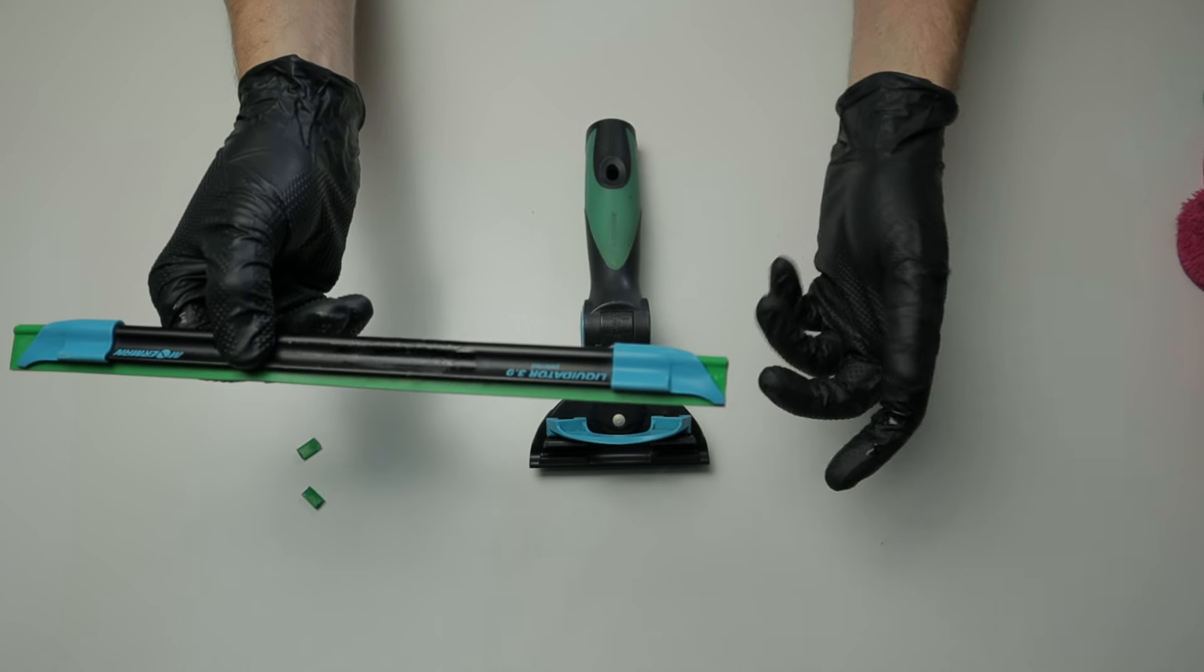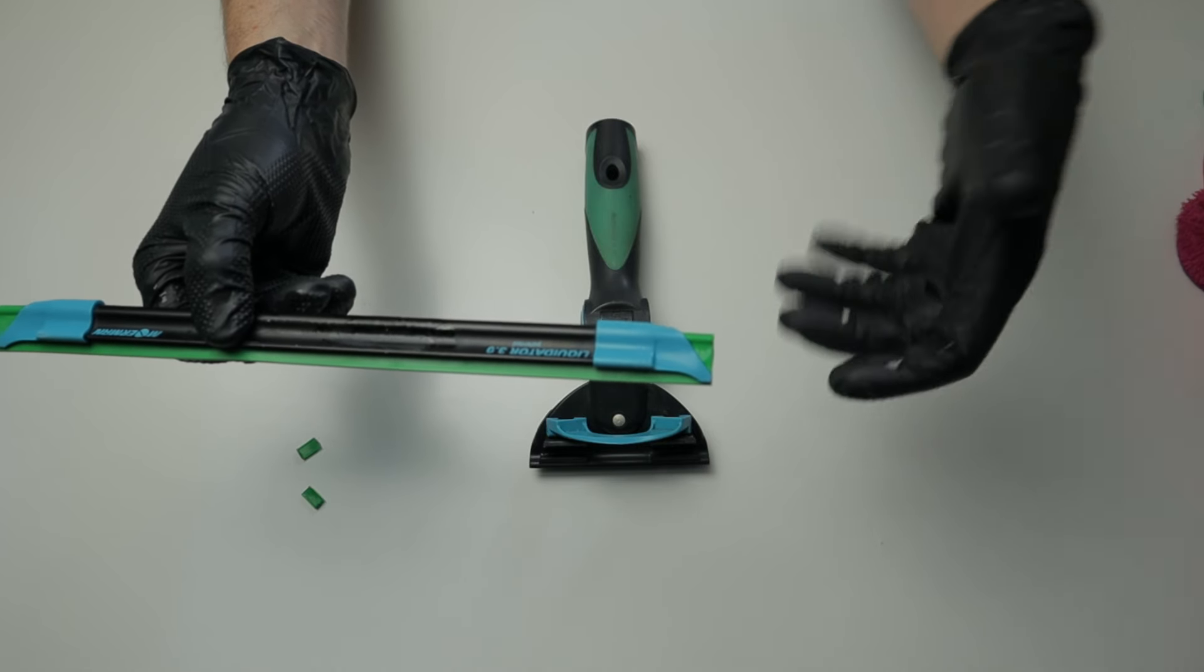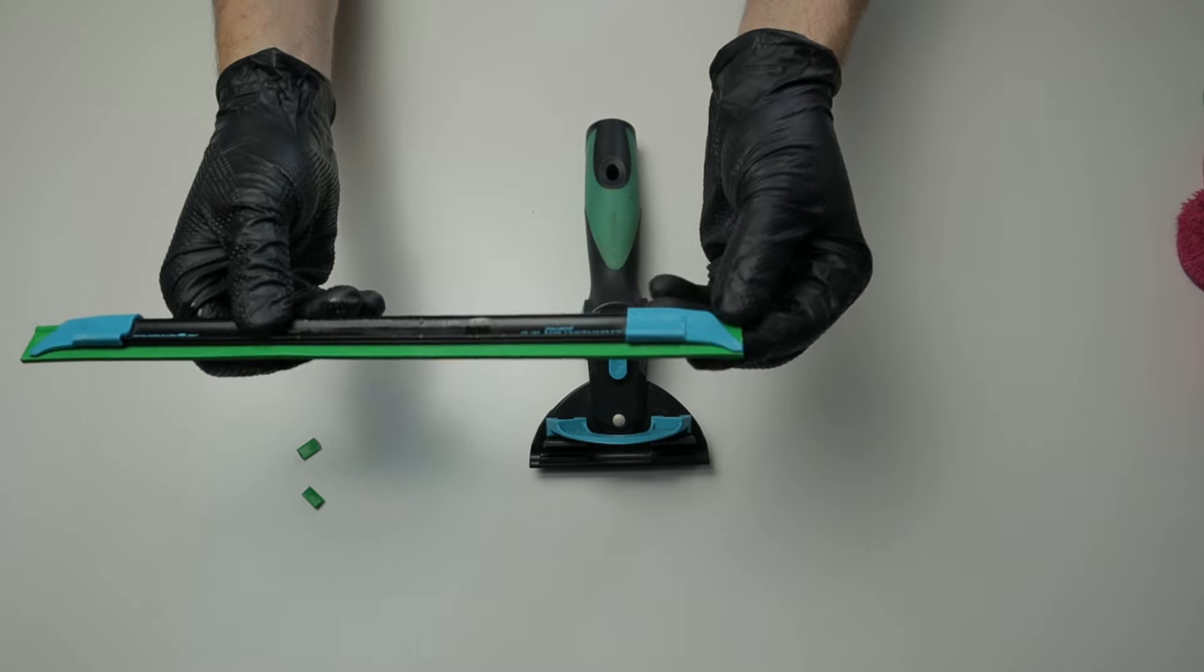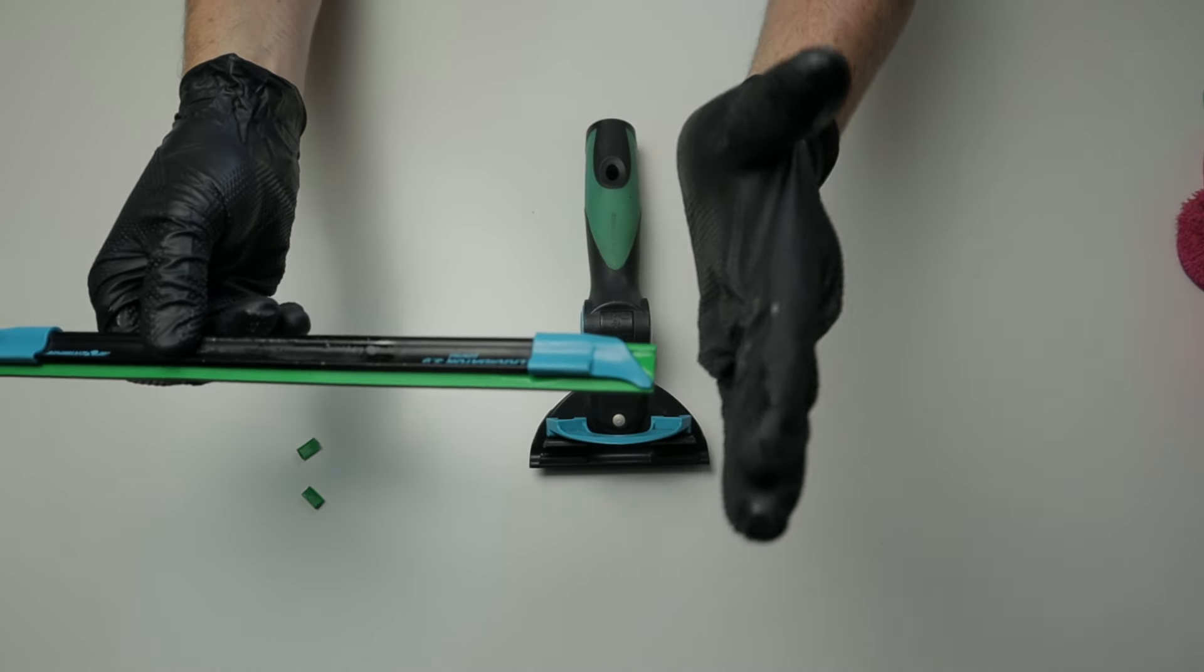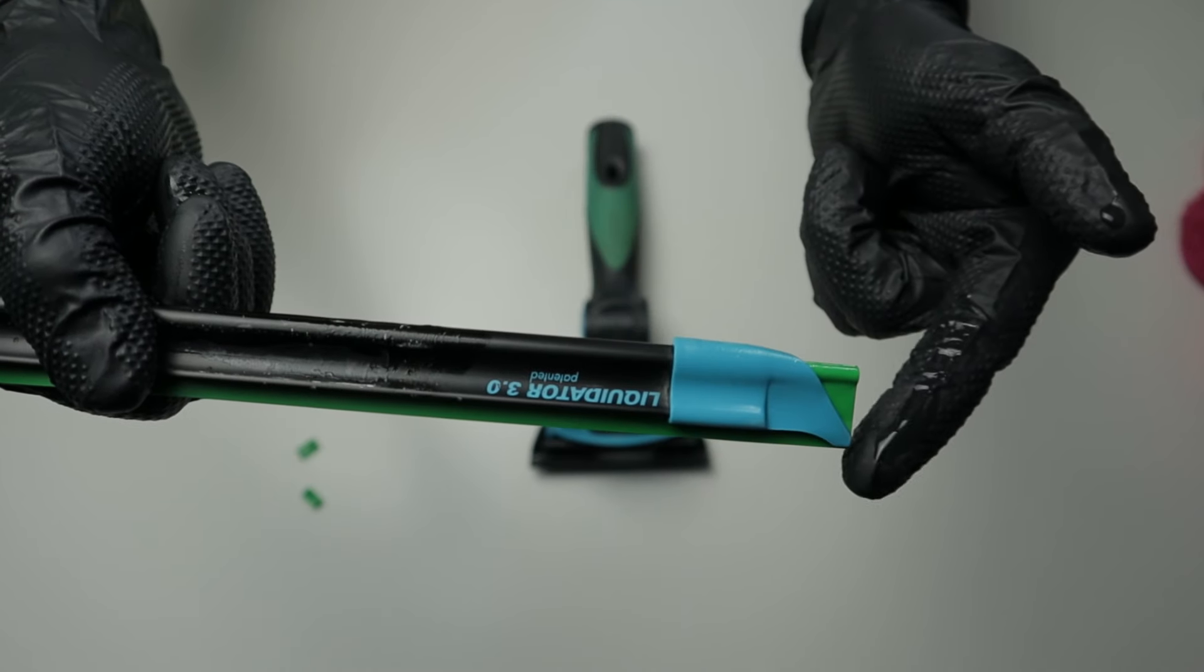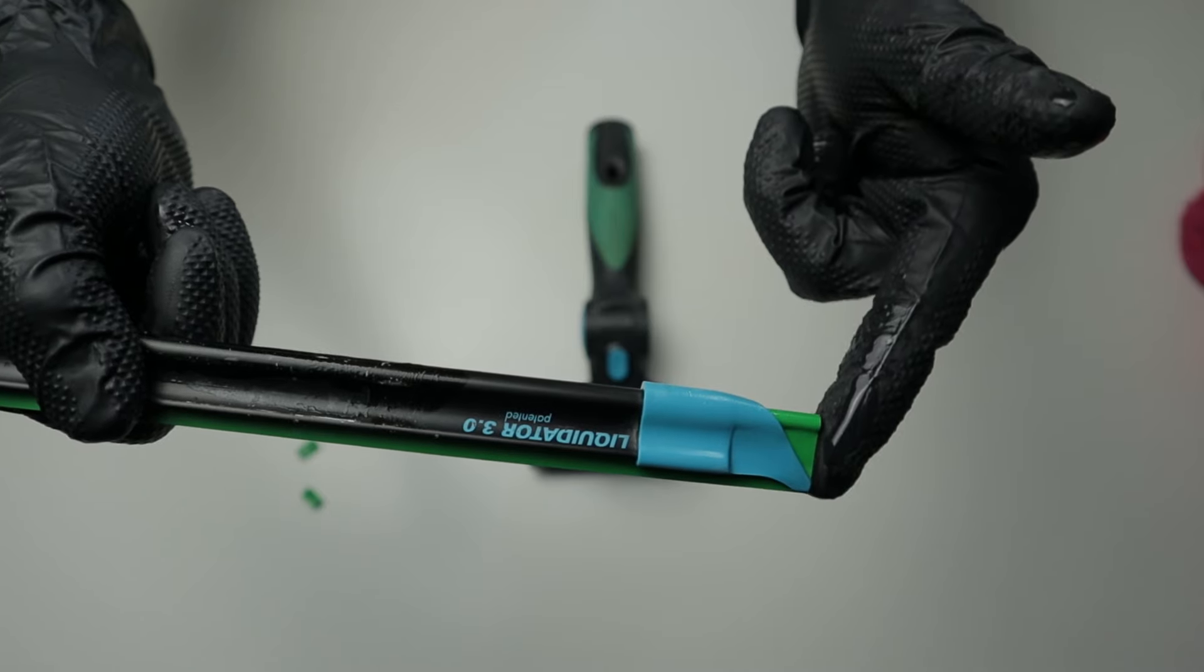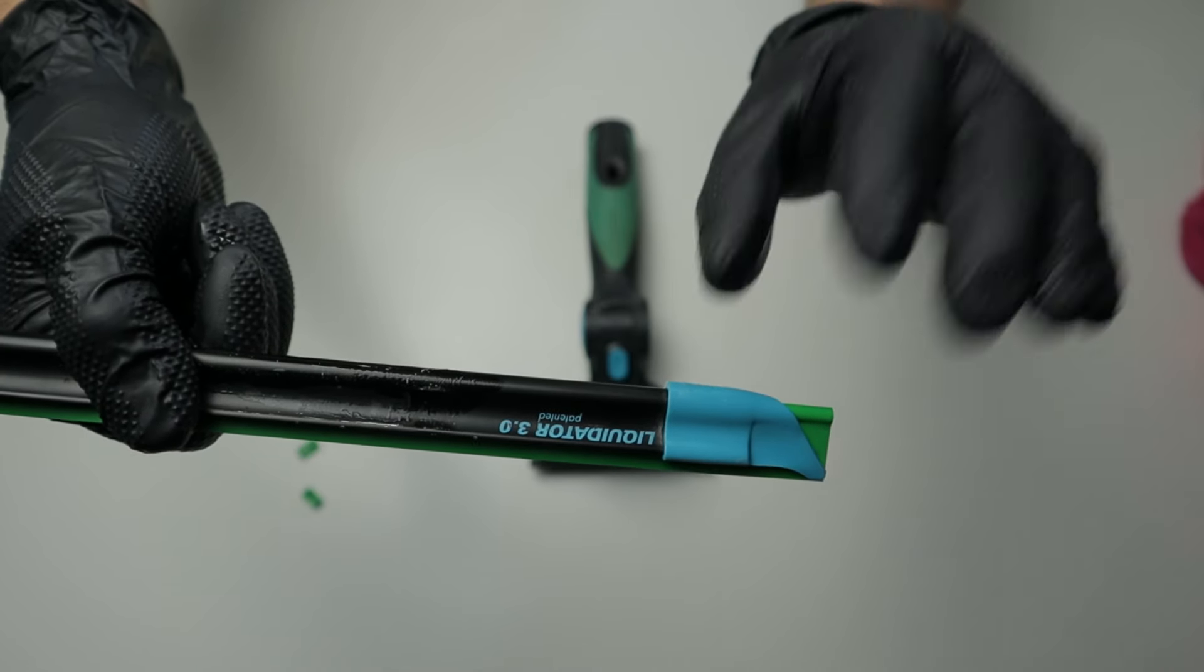So unlike the previous squeegee, where we left a few millimeters hanging out at the end to create a buffering effect, this specific tool, because it's a precision squeegee, we want our rubber to be completely flush at the ends with the end clip. You can see here how the end of the clip is in line with the rubber. That is what you want on both ends of the squeegee channel on this specific squeegee.